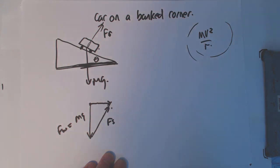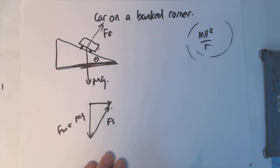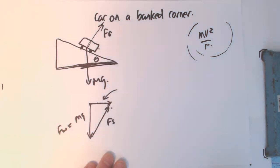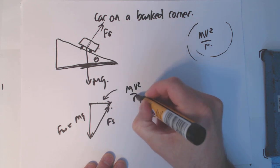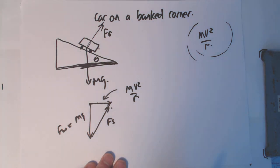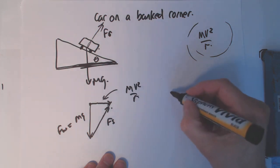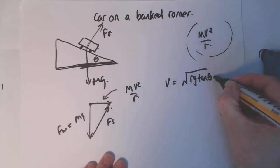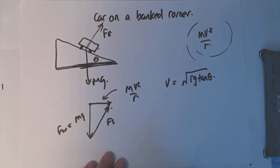horizontal vector, which is the vector required to keep that car going in a circle. That therefore means that this vector here is equal to mv²/r. So instead of having tension like you have with the conical pendulum, you've got a support force. All the equations remain the same, and if all the equations remain the same, then we know that v will be equal to the square root of rg tan θ.